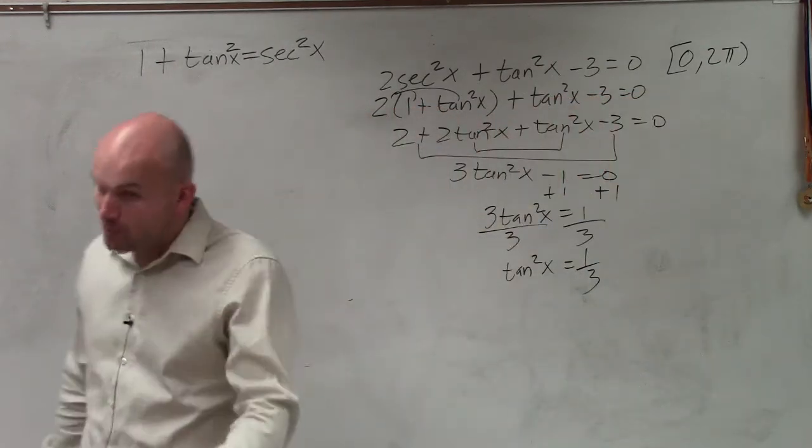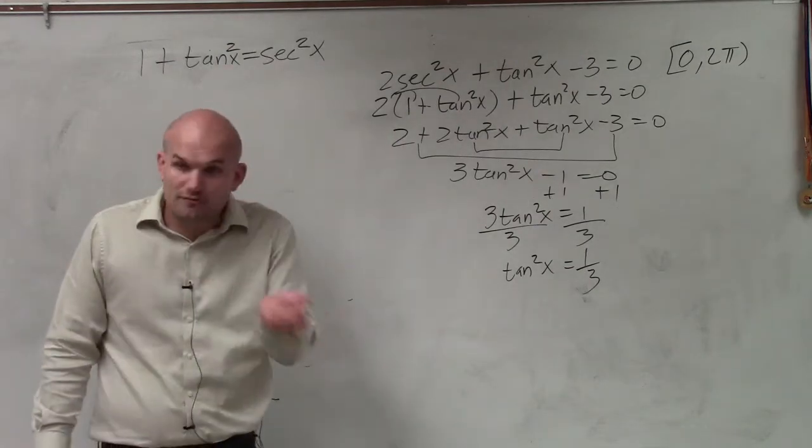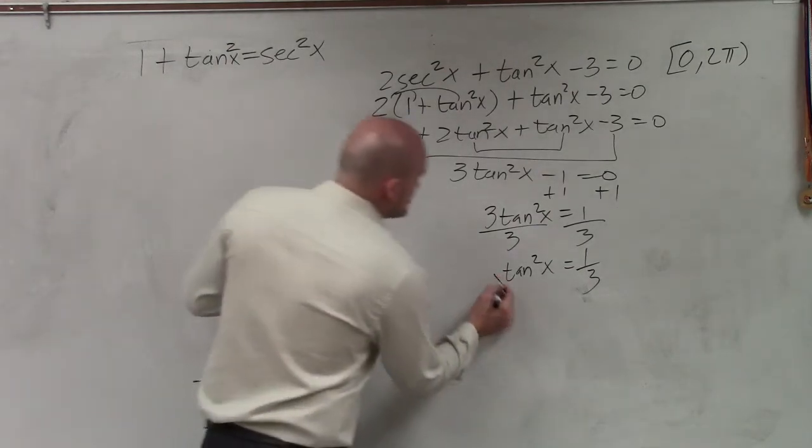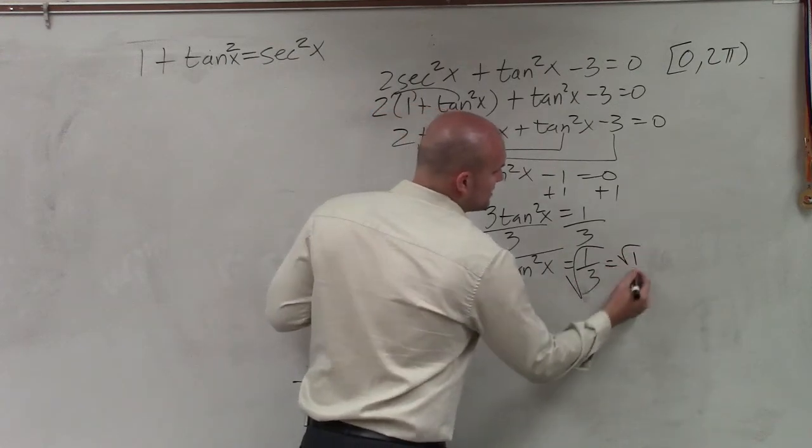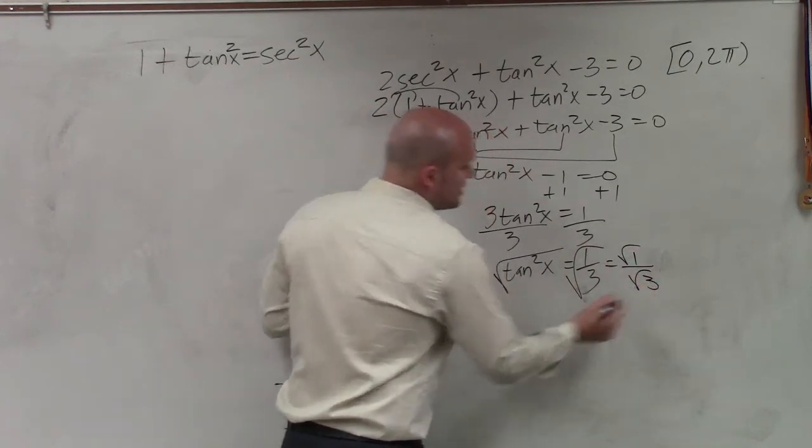Now I need to undo the squaring function because I just want to solve for tangent, not tangent squared. So I take the square root. Remember, the square root of a fraction is the same thing as square root of 1 over the square root of 3.